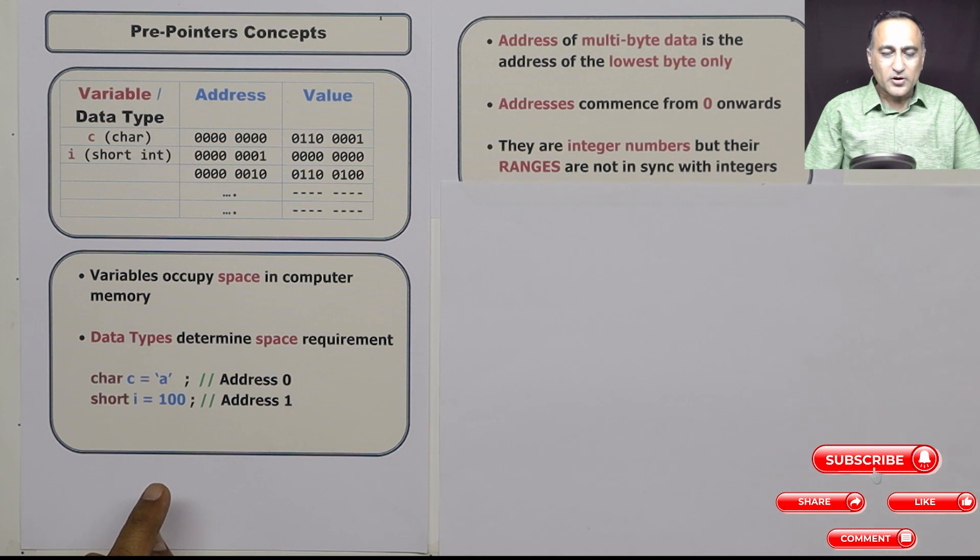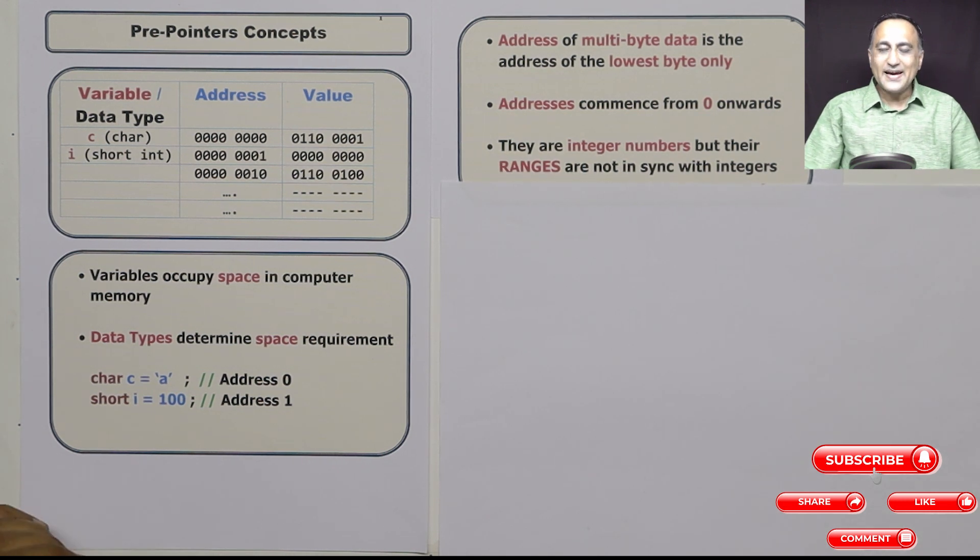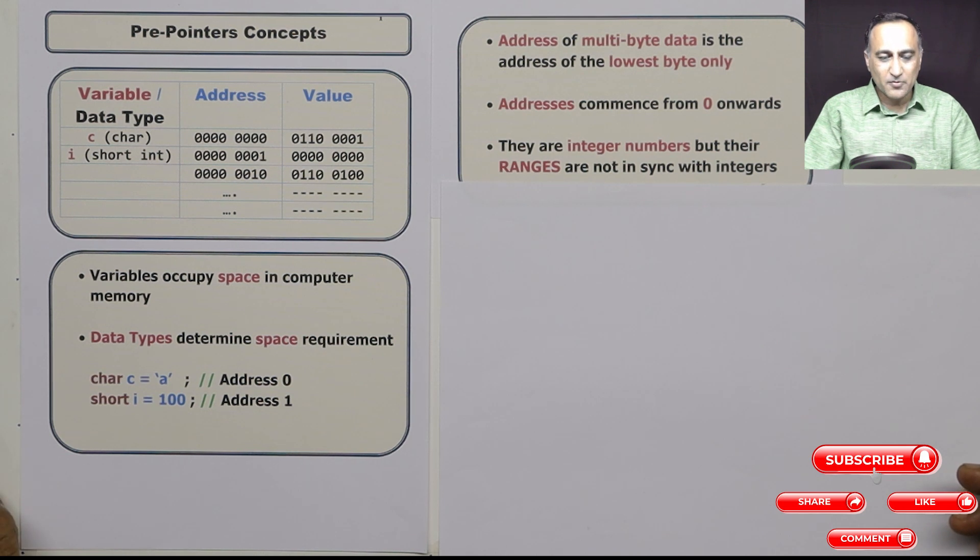Now, another important thing in computers, addresses start from zero and continue on the positive side, they are like your normal integers, except that they do not have the range of your integers. They have a range which depends upon the hardware memory of that particular chip of that particular computer. So depending on how much memory you have installed, that will give you the addresses that can be generated in the main memory.